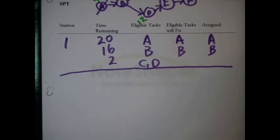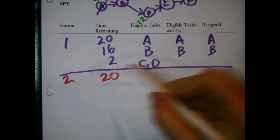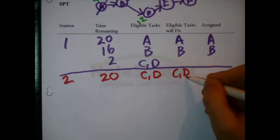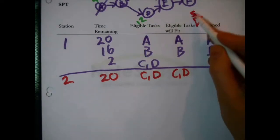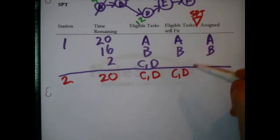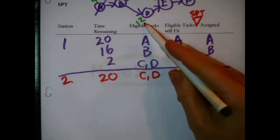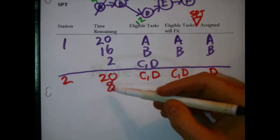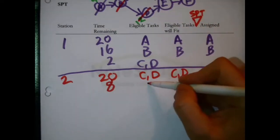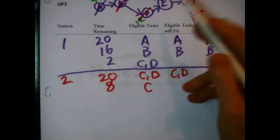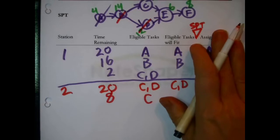Open the second workstation: 20 seconds remaining; C and D are the candidates and both will fit. This time we're using shortest processing time, so we choose the smaller of the two — D gets the assignment. D is 12 seconds, knocking time remaining down to 8 seconds. E doesn't become eligible yet, so the only remaining candidate is C. C is 20 seconds and won't fit into 8 seconds.